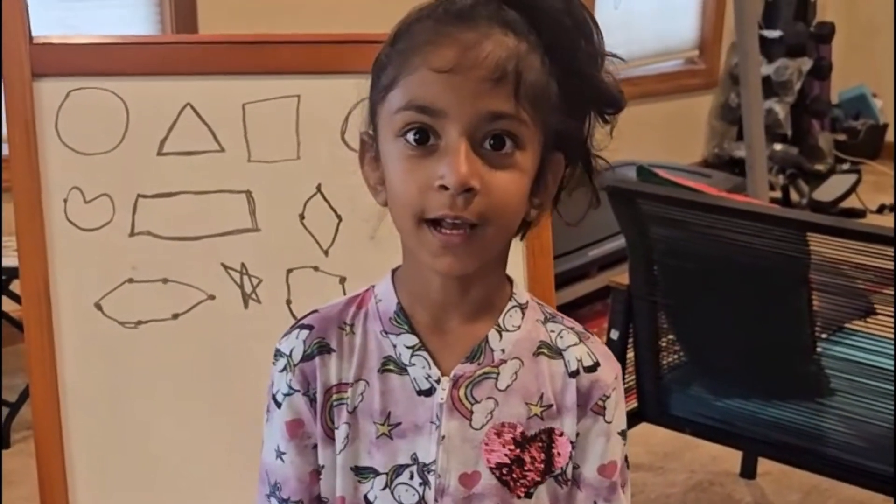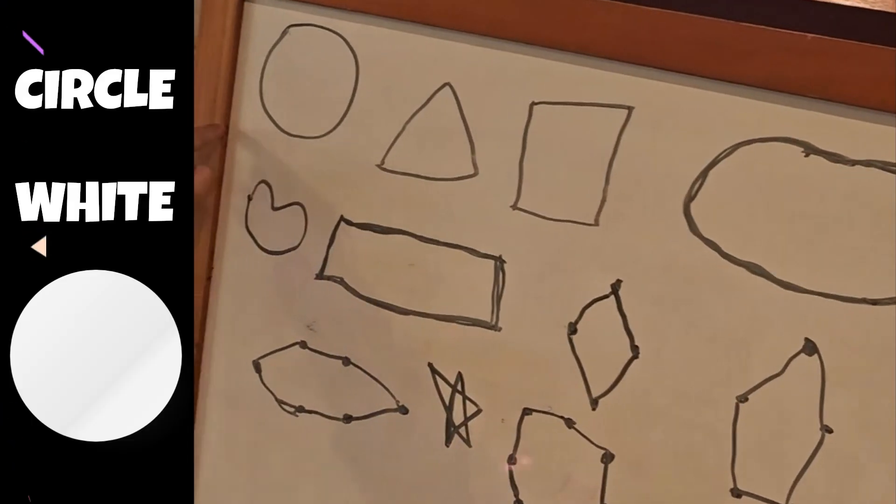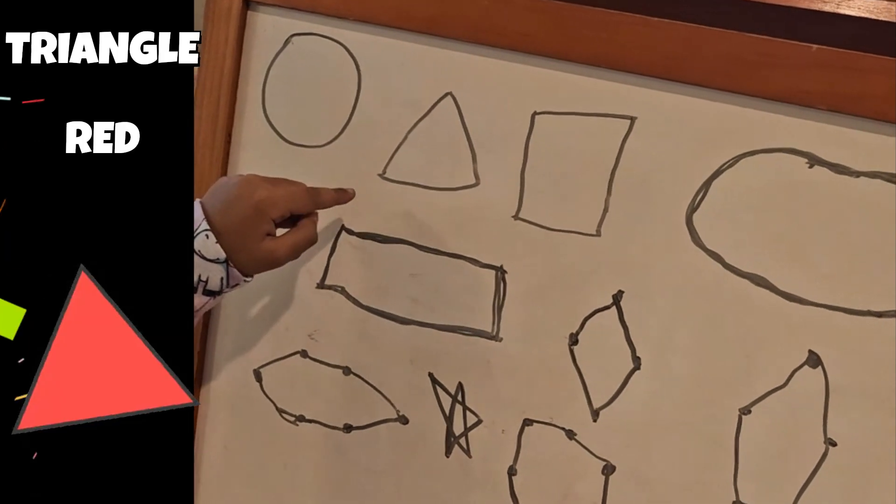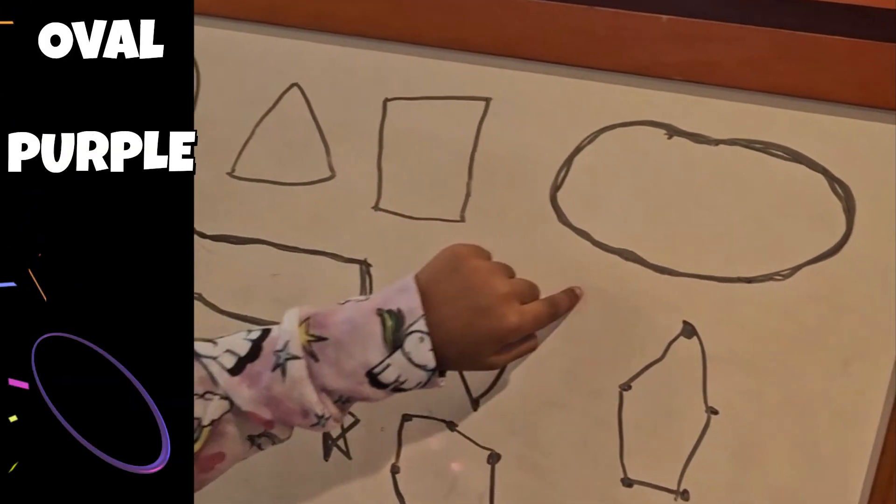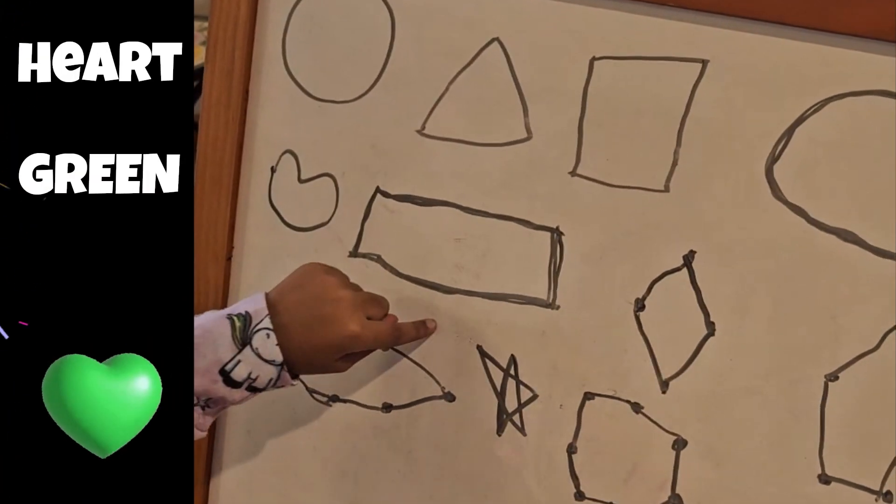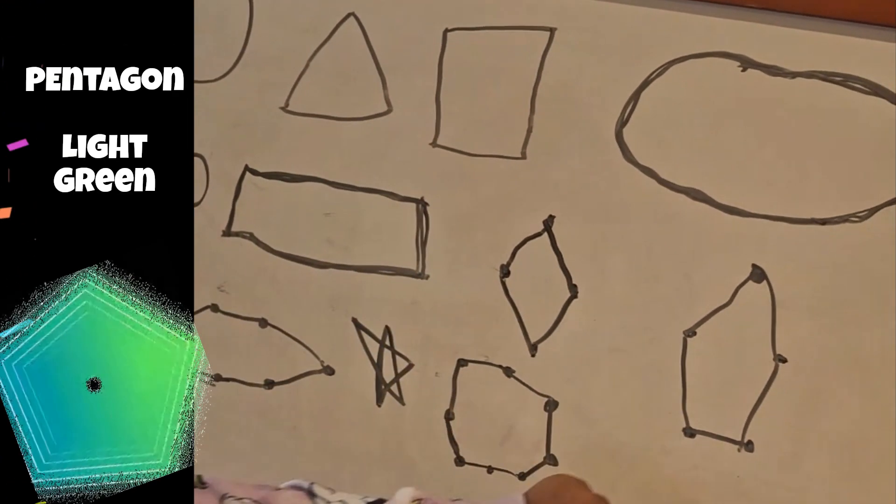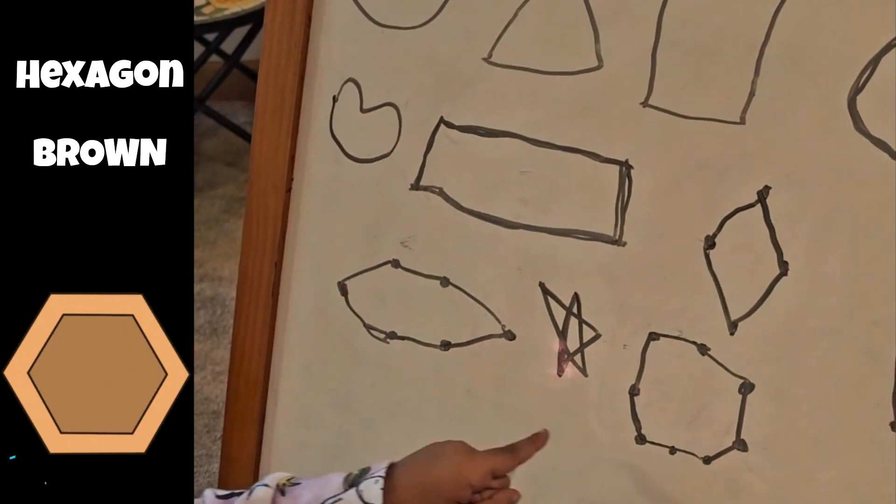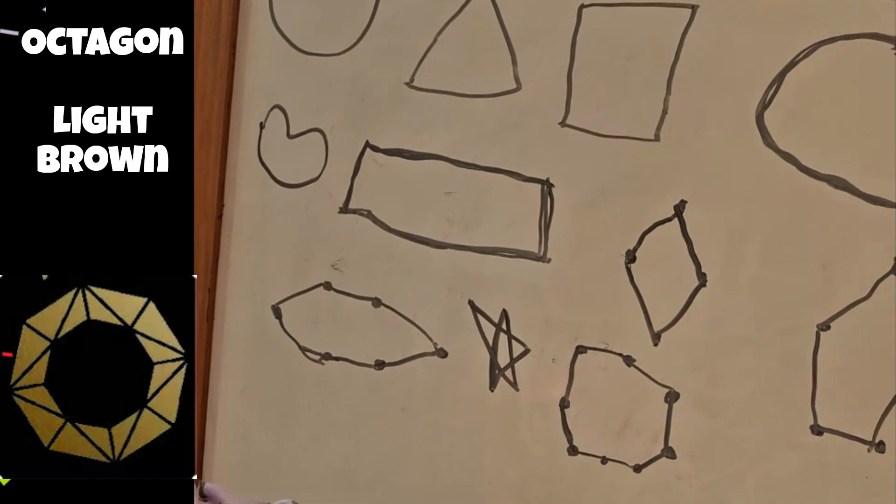Today I'm going to show you the colors. Circle, triangle, square, oval, heart, rectangle, diamond, pentagon, hexagon, star, octagon. Okay.